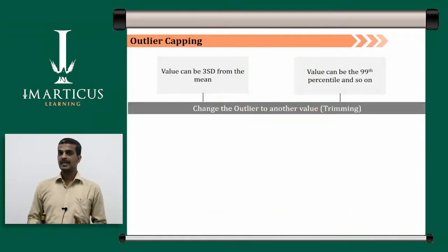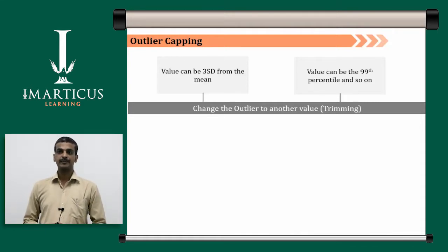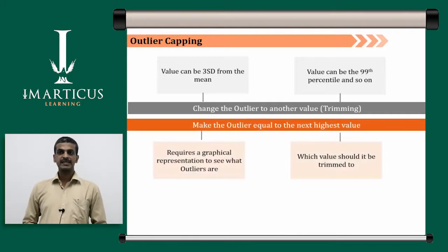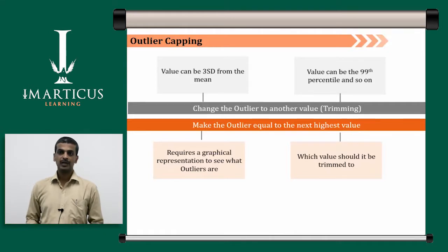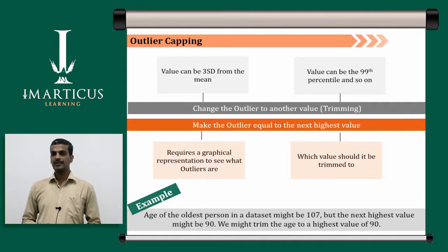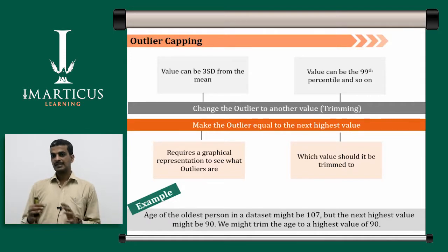Outliers can be completely discarded, or you can set a cap — for example, values beyond 3 standard deviations from the mean, or beyond the 99th percentile. You can also change the outlier to another value by trimming it — making it equal to the next highest value, which requires a graphical representation. For example, if the oldest person in a dataset is 107 but the next highest age is 90, you would trim age to a maximum of 90 so it aligns with the rest of the data.